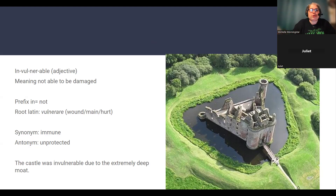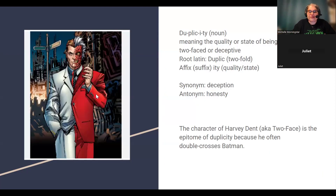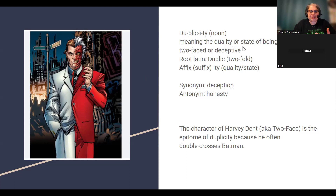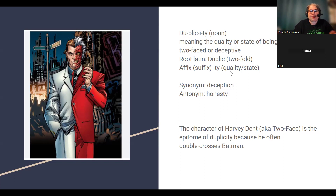The second word we chose was duplicity. The picture I picked for this one was Harvey Dent from Batman, because he is the epitome of Two-Face — he actually has two parts of his body if you follow the Batman story. Duplicity is a noun meaning the quality or state of being double, usually two-faced or deceptive. The Latin root is 'duplic,' meaning twofold, and the suffix is '-ity,' meaning the quality or state. So together it means the state or quality of being double or deceptive. The character Harvey Dent, aka Two-Face, is the epitome of duplicity because he often double-crosses Batman.